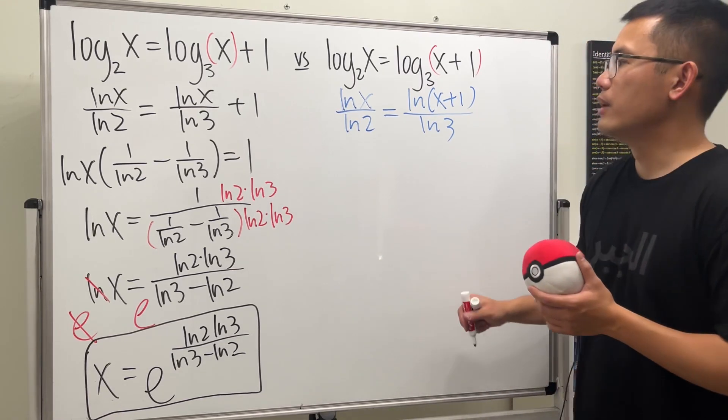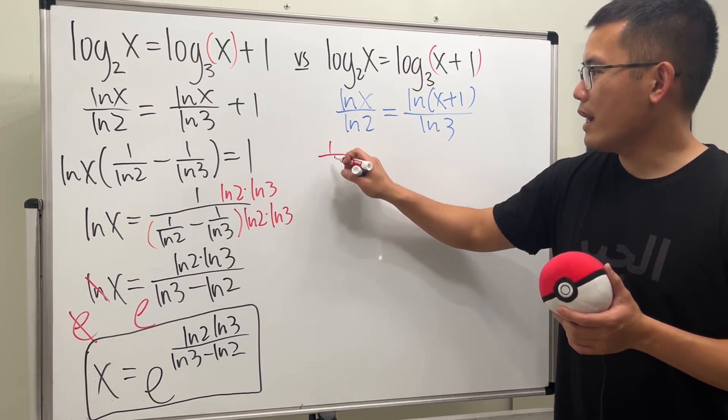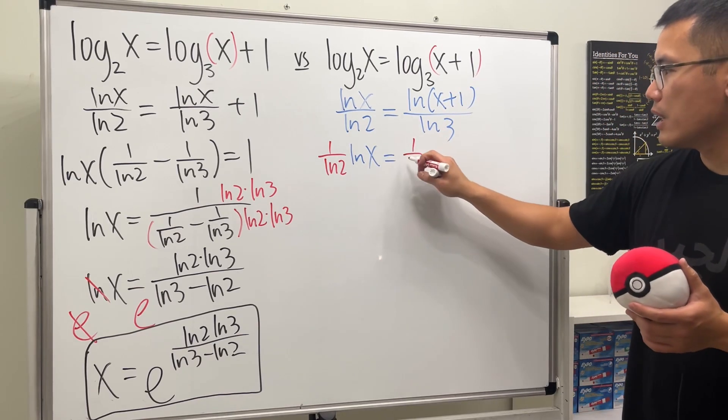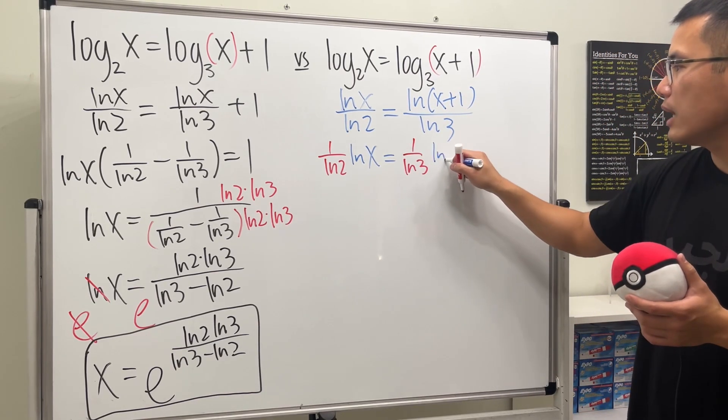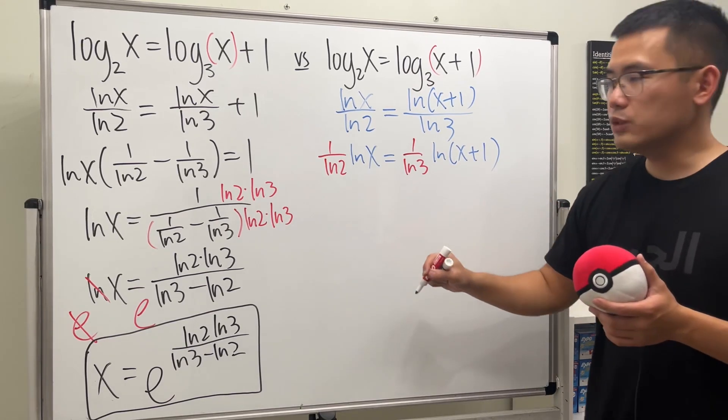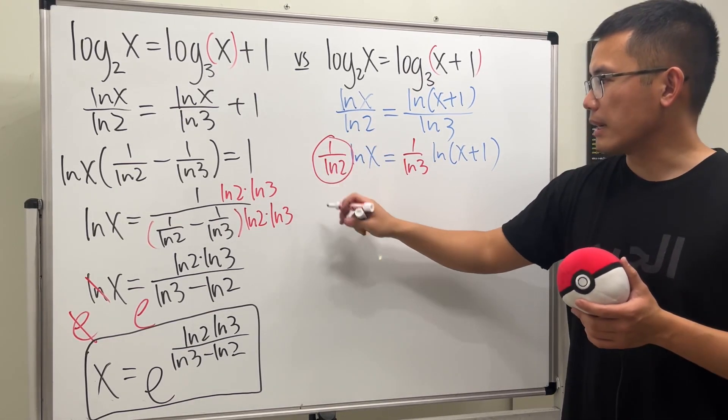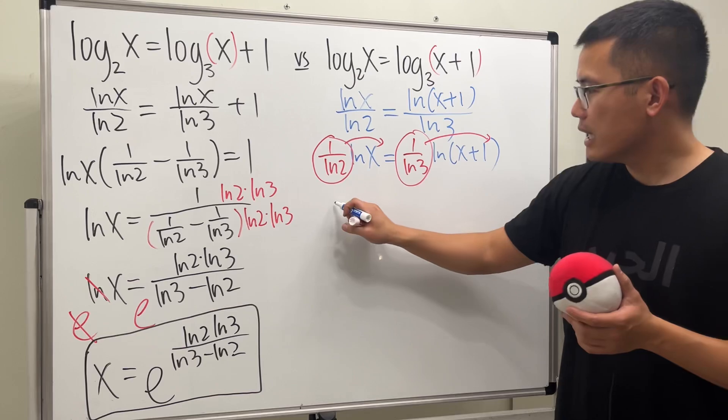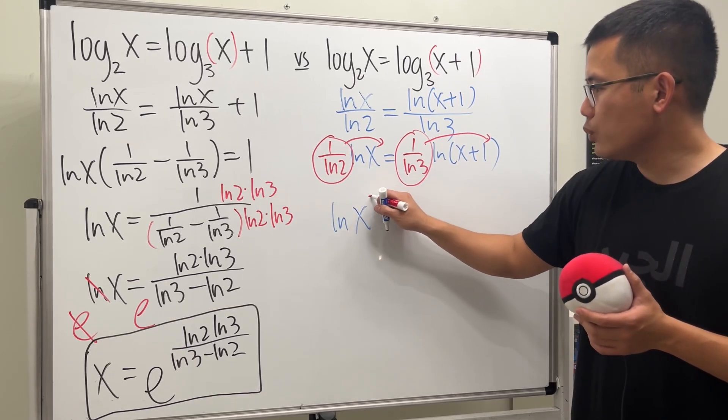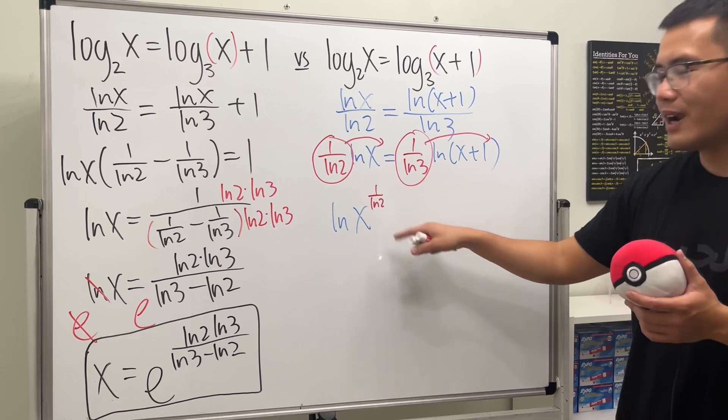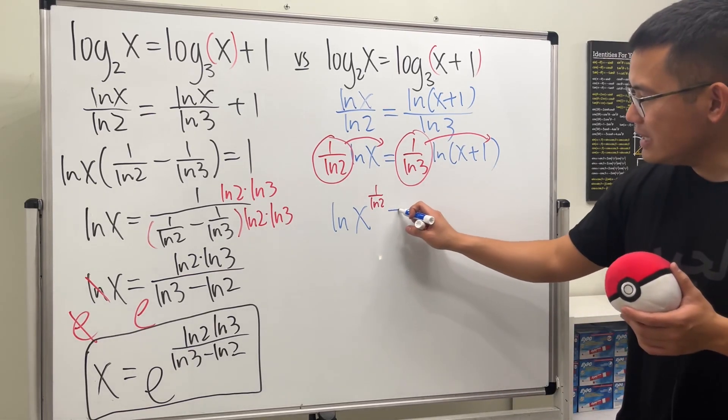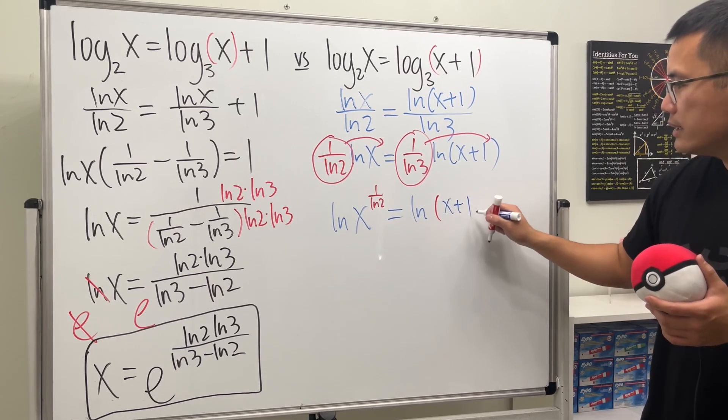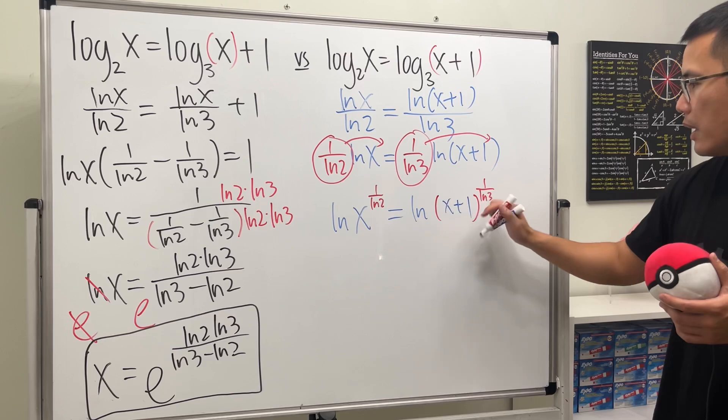Yes, this is how. We can purposely look at this as 1 over ln 2 times ln x. And that's equal to 1 over ln 3 times ln of x plus 1. Because this way, we can put this, which is just a number, up here to become a power. Likewise, let's go ahead and do the same thing here. So we get ln x raised to the 1 over ln 2 power. And that's equal to ln of x plus 1 raised to the 1 over ln 3 power, like so.